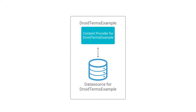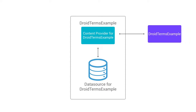In Droid Terms Example, which I have opened here, you can view Android glossary terms with their definitions. And then, when you come across a new word, you can add a definition for it, save it, and it'll appear here on the main screen. Droid Terms Example is storing all of this information — including the words and the definitions — on the phone itself using a content provider.